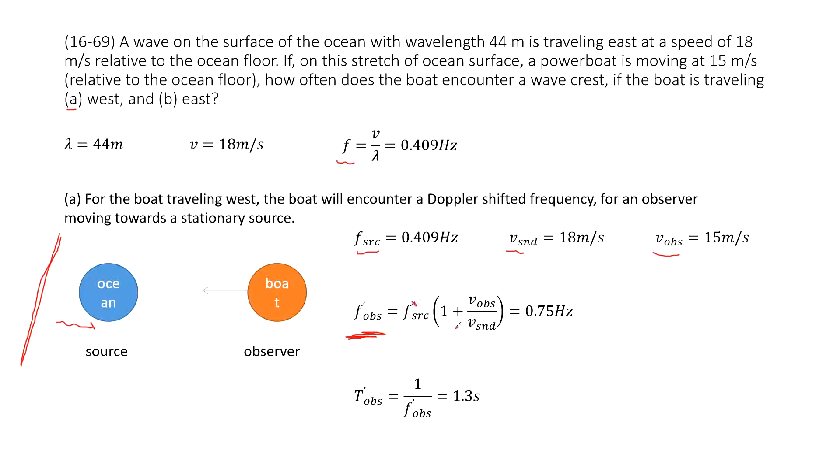And then we can input all the known quantities. Sorry, there is no plus. So we can input all the known quantity inside, get the frequency for the boat received. The moving boat received this one and then get the period as one over frequency.